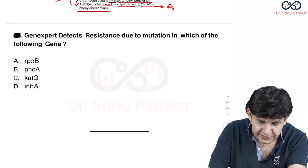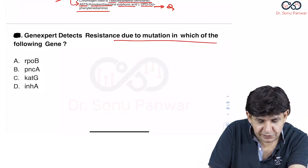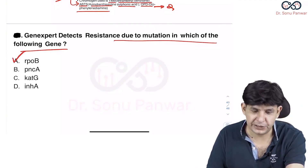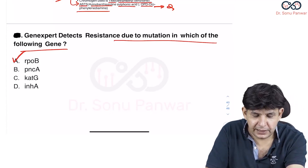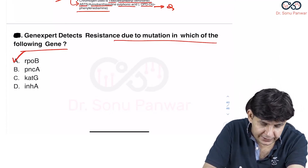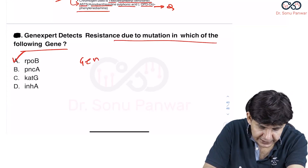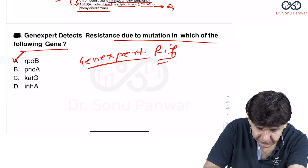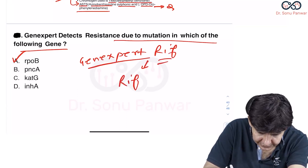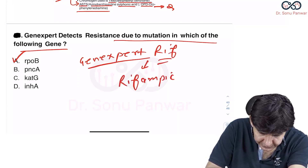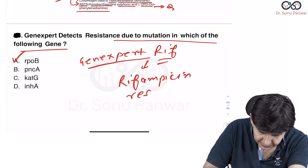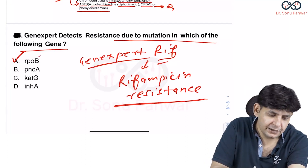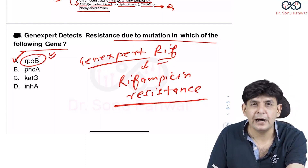The Gene Expert detects resistance due to mutation in which gene? The answer is the RPOB gene. Gene Expert, another name is CBNAAT, and the full name is Gene Expert RIF. This RIF suggests that it detects rifampicin resistance. So obviously, the rifampicin resistance gene is the RPOB gene.